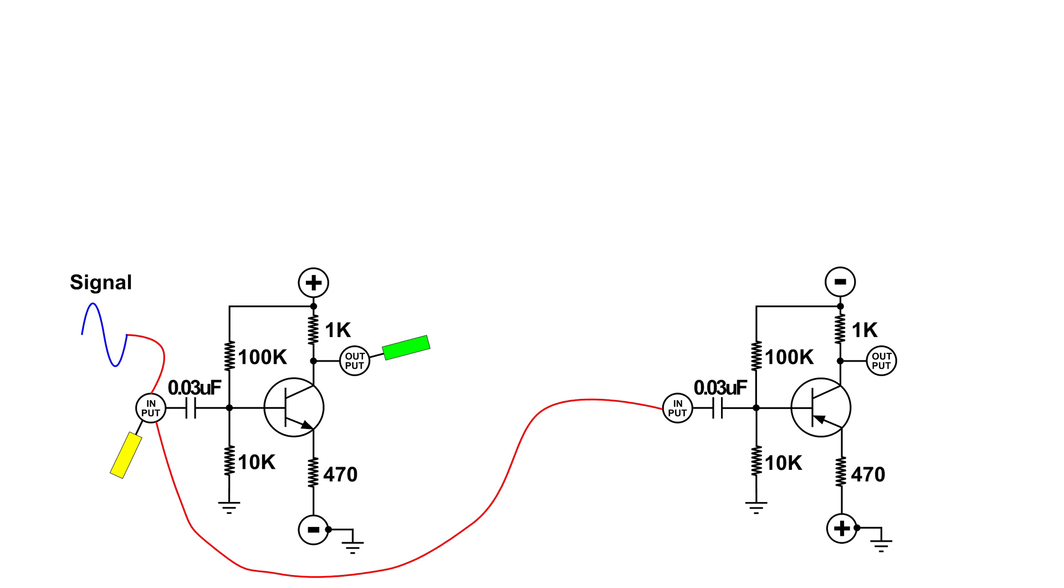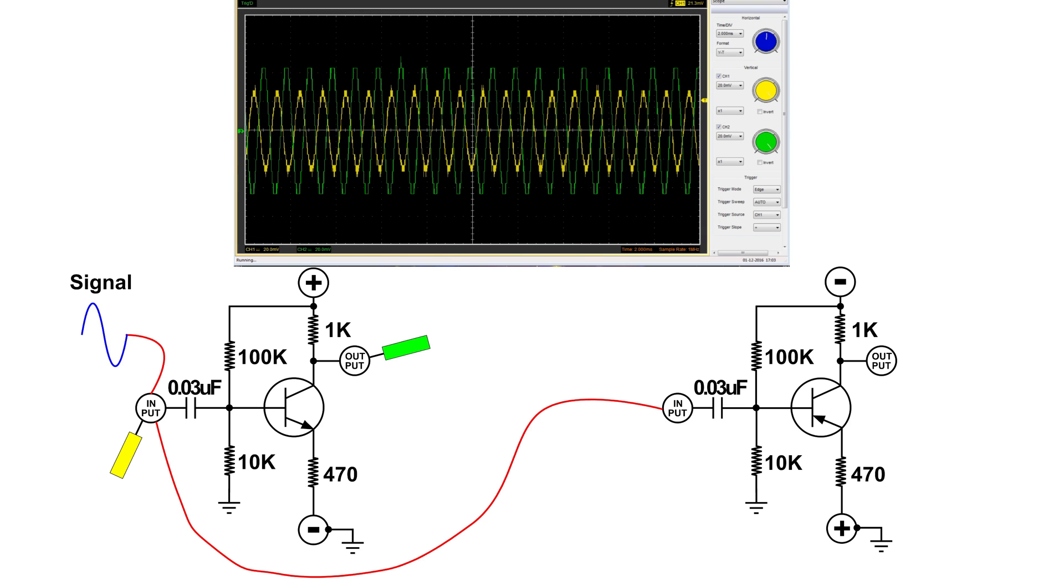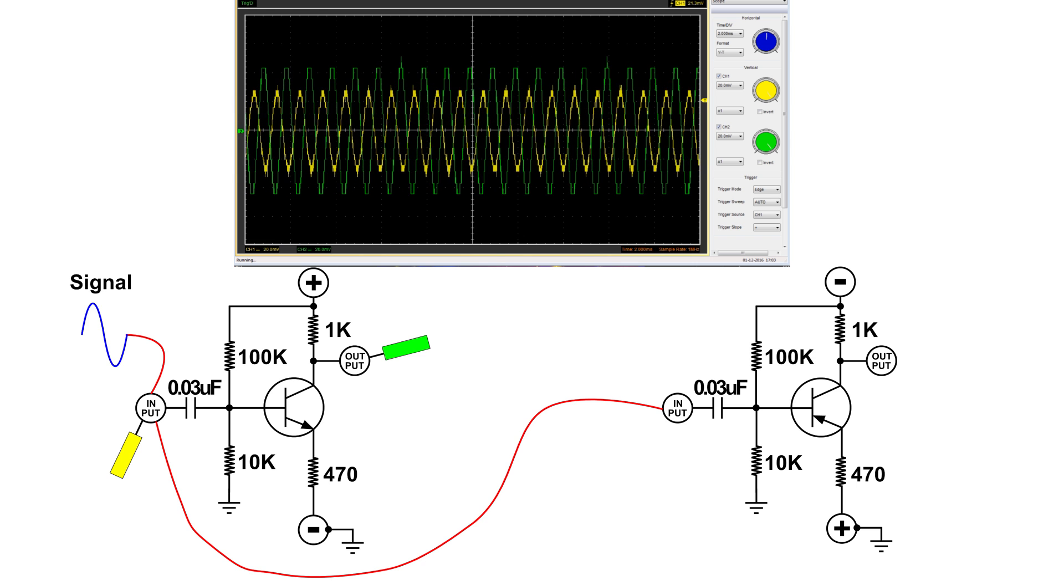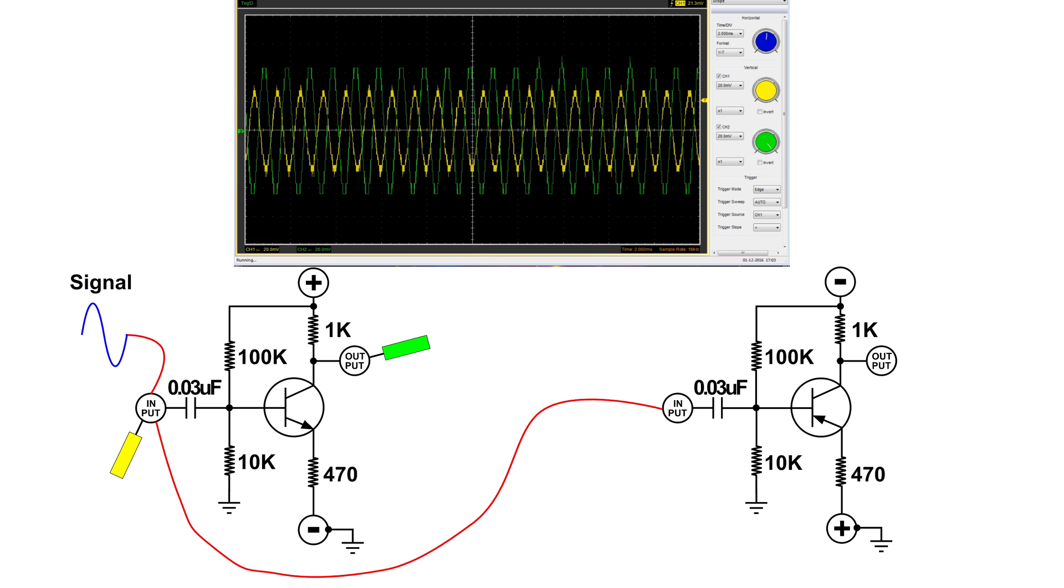The yellow trace is the input signal and the green one is the output at the collector of the NPN transistor.